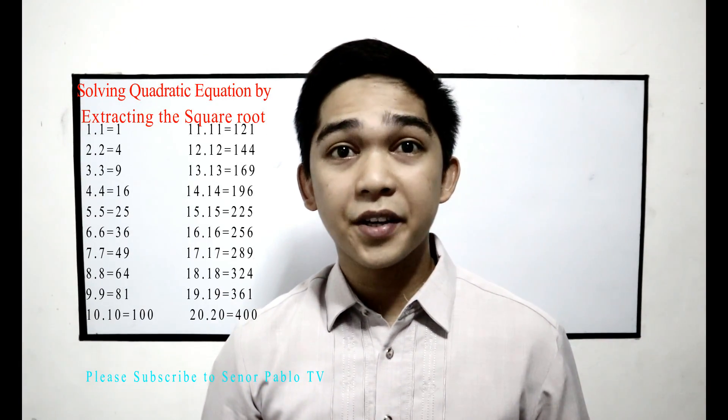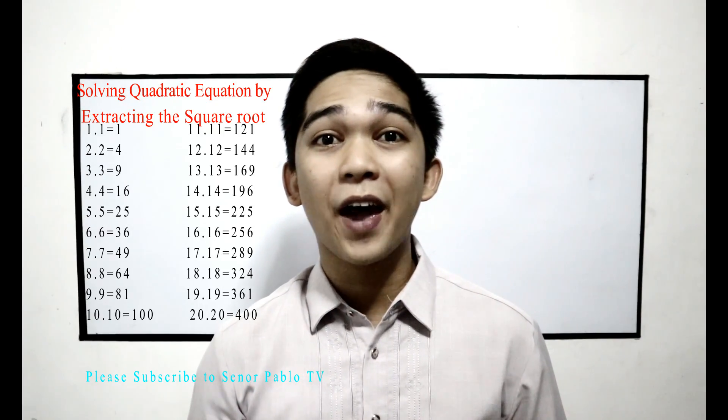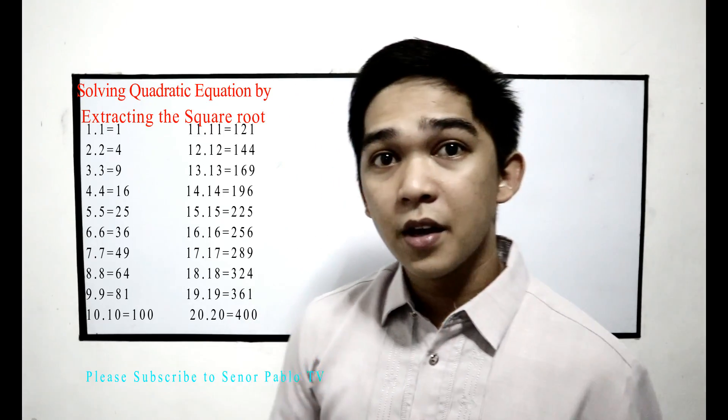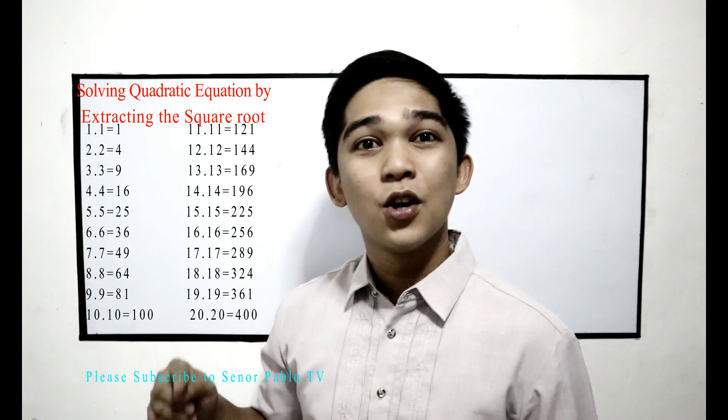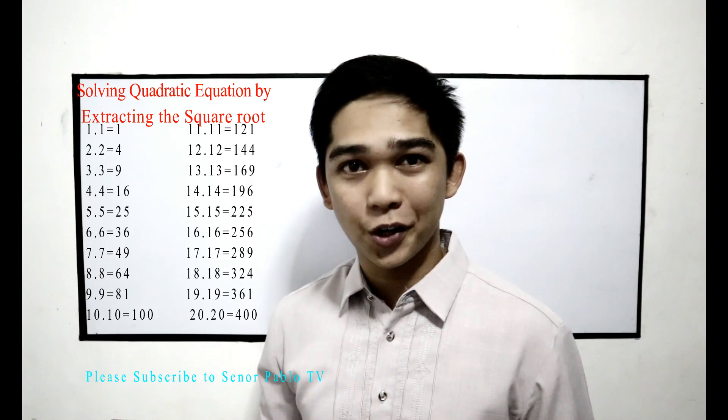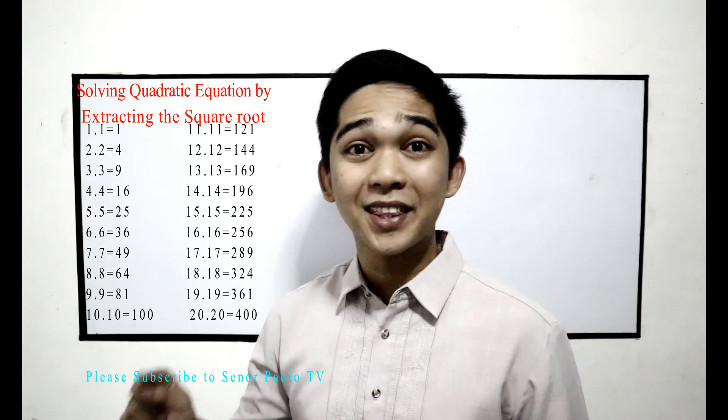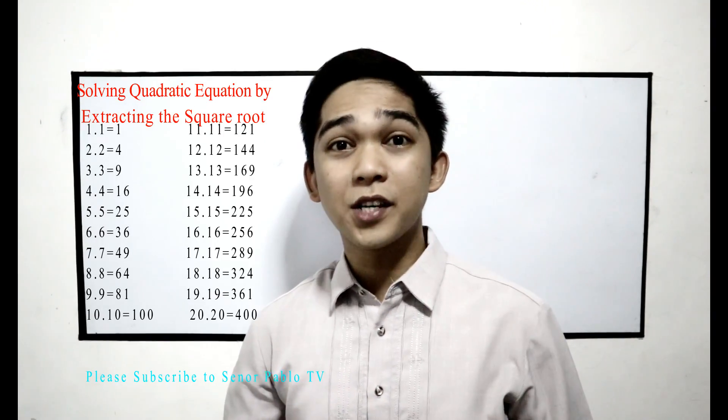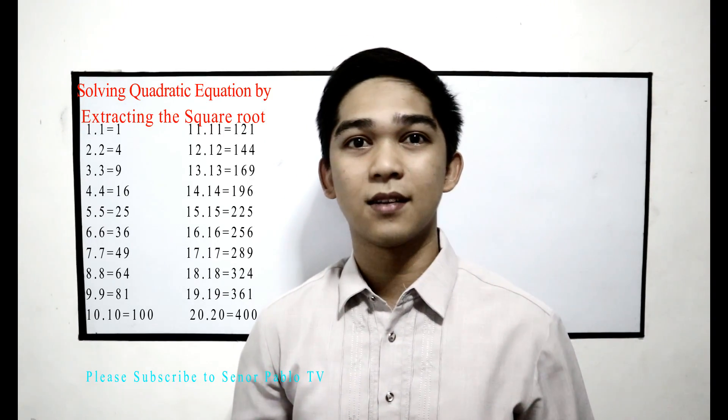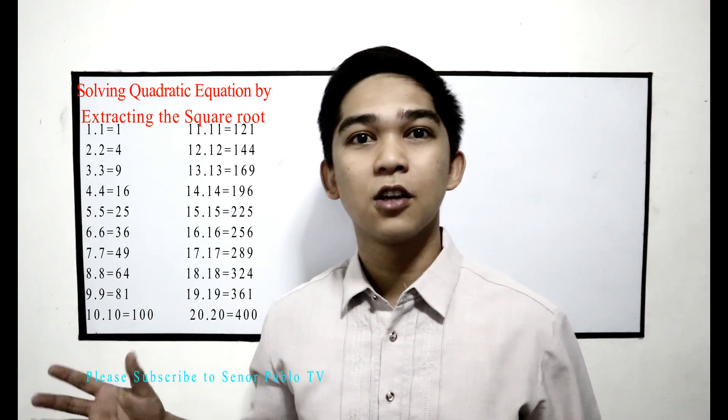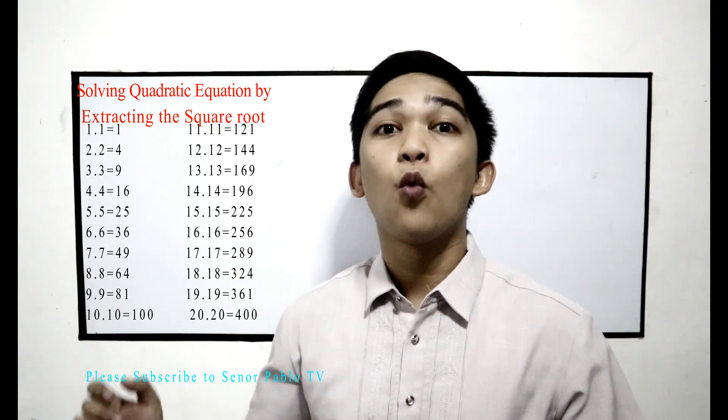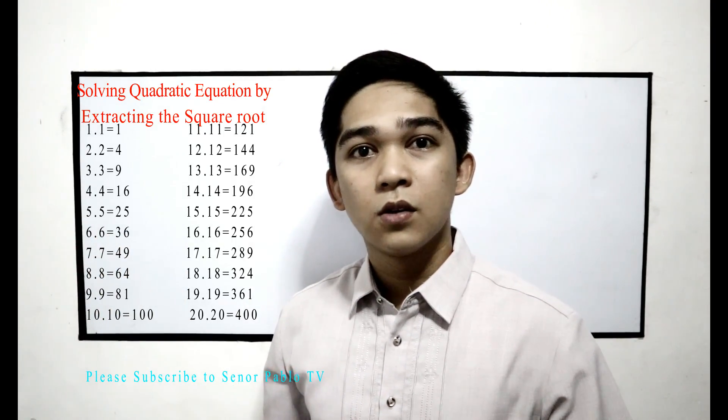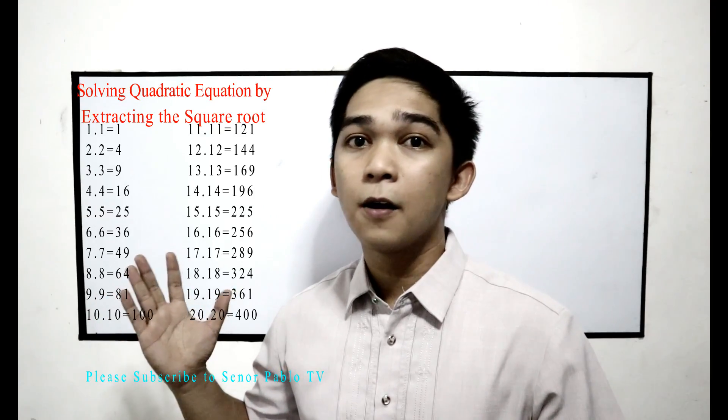In this lesson, it is very important that you are familiar with the perfect square numbers. First, let us recall. 1 squared is 1. 2 squared is 4. 3 squared is 9. 4 squared is 16. And we have 25, 36, 49, 64, 81, 100, 121, 144, and so on. In order for you to solve extracting the square root easily, you need to memorize those, or at least familiarize.